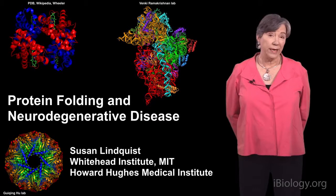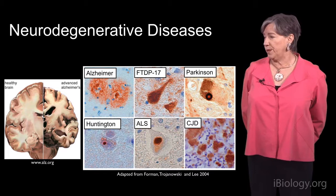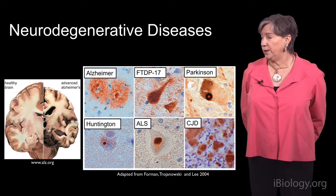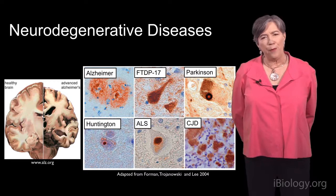These are some of the common and uncommon neurodegenerative diseases you might have heard about: Alzheimer's disease and Parkinson's disease, frontal temporal dementia, Huntington's, ALS, and Creutzfeldt-Jakob disease. And you can see these brown blobs inside of these cells, and those brown blobs are aggregated protein.